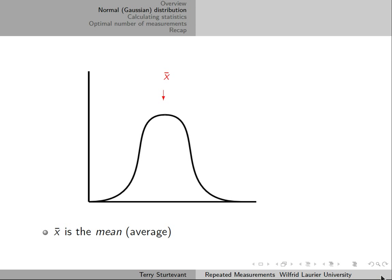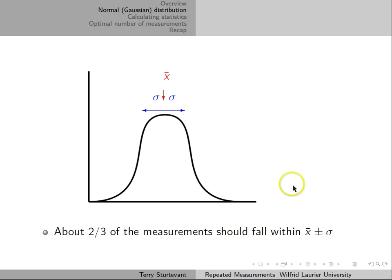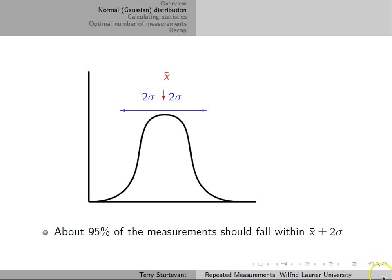Here's an example of a distribution of a bunch of measurements. X-bar is the term used for the average, or the mean. Sigma is the standard deviation, which is the width of the distribution. About two-thirds of the measurements should fall within X-bar plus or minus sigma, and about 95% of the measurements should fall within X-bar plus or minus 2 sigma.